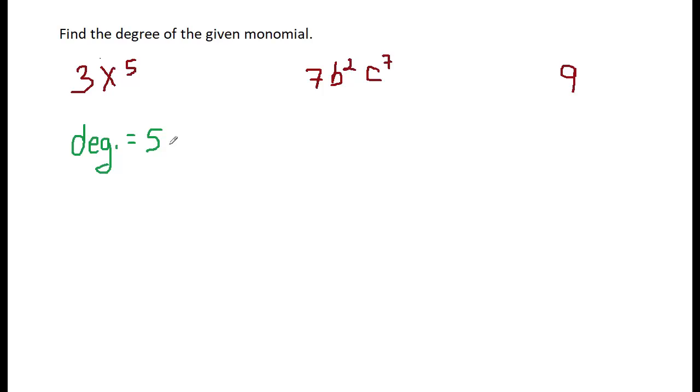I mean, look, there's more than one variable. We have B's and C's. We have B squared C squared - excuse me, B squared C to the seventh power. So 7B squared C to the seventh.